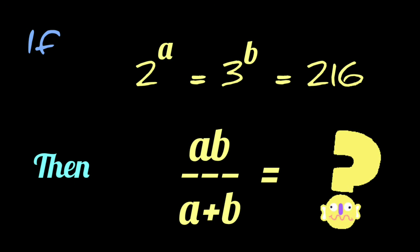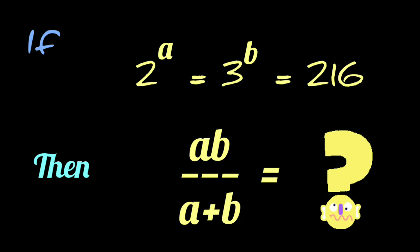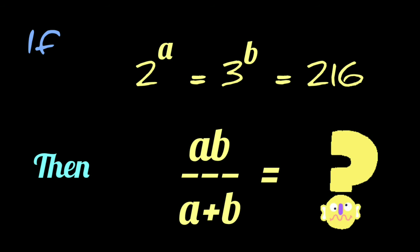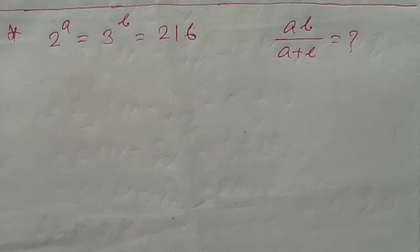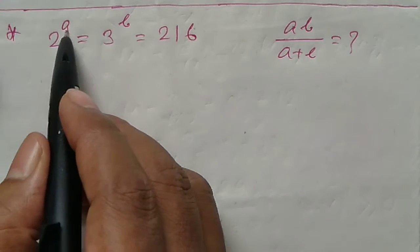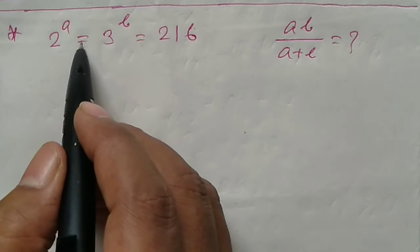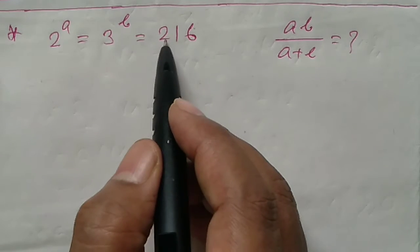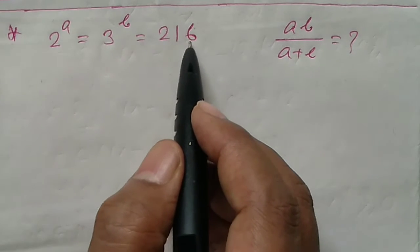If 2 to the power A equals 3 to the power B equals 216, then find the value of AB by A plus B.